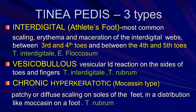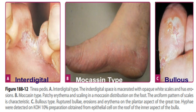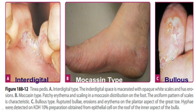Tinea pedis has three types: the interdigital type is most common — erythematous maceration from the interdigital webs, third and fourth toes, fourth and fifth toes. Tinea interdigitale and moccasin type: vesiculobullous also chronic hyperkeratotic moccasin type. Three types: interdigital tinea pedis, moccasin type, and bullous type. Identified through KOH 10% preparation with microscopy.